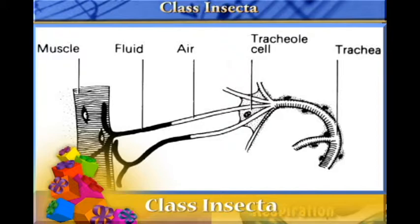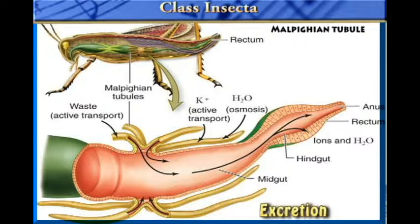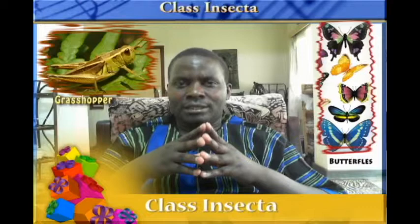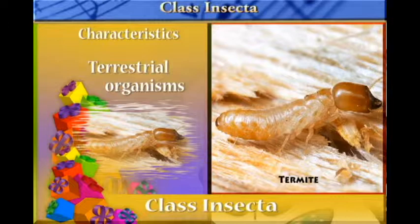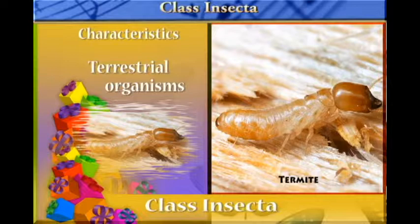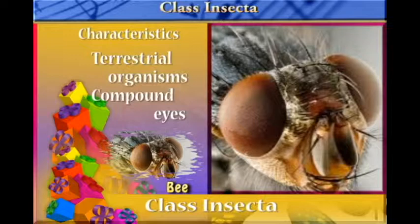Excretion is carried out via the Malpighian tubules, which are responsible for removing waste materials from the body. Most organisms found in class Insecta are terrestrial, meaning they live mainly on land. All organisms in this class also have compound eyes.